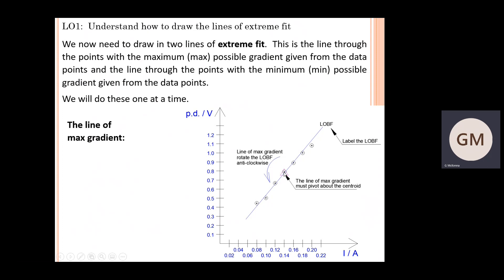All of these extreme lines must pass through the centroid. If we're doing our max gradient, effectively you're going to put your ruler on the page, the ruler must pass through that centroid, and really pivot about that point. You're going to rotate your ruler in an anti-clockwise direction to get that max gradient.